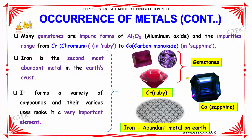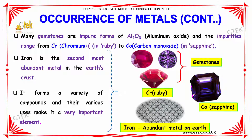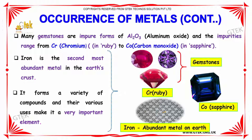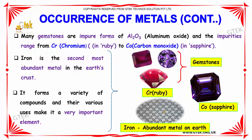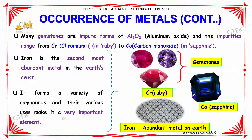This is ruby. Iron is the second most abundant metal in the earth's crust. It forms a variety of compounds and their various uses make it a very important element.